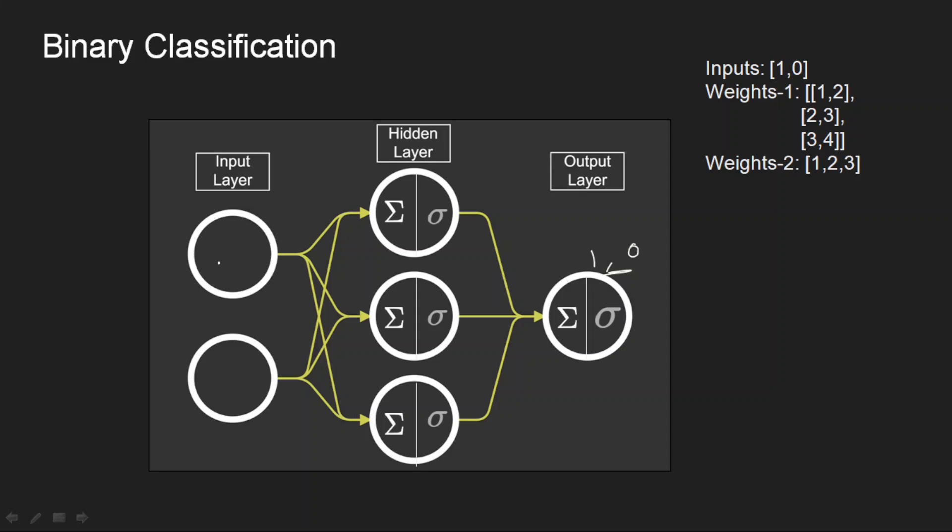Now I have two inputs here. My inputs are actually one and zero. So I am initializing the inputs here and weights for both the layers. Here we have to calculate the weighted sum. For that what we need to do is we need to calculate 1 into 1 plus 0 into 2.